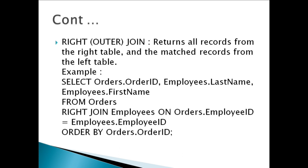RIGHT OUTER JOIN returns all records from the right table and the matched records from the left table. The RIGHT JOIN keyword returns all records from the right table (employees) even if there are no matches in the left table (orders).